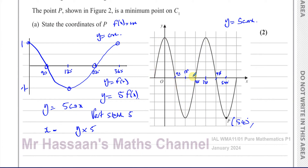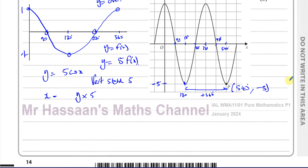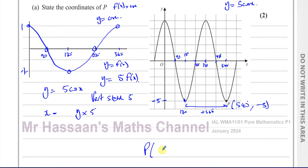The curve repeats every 360 degrees — so the minimum at 180° repeats at 180 + 360 = 540°. The y-coordinate is multiplied by 5: where it would have been −1, it's now −1 times 5, which is −5. So the point P has y-coordinate −5. Therefore P has coordinates (540°, −5).